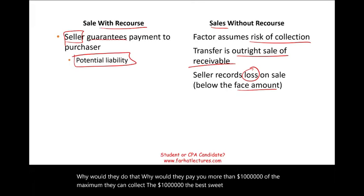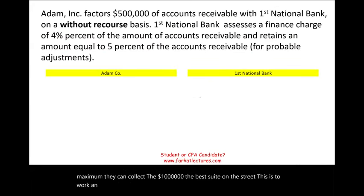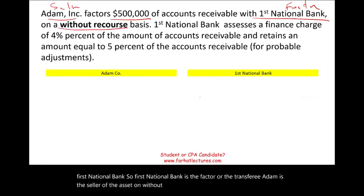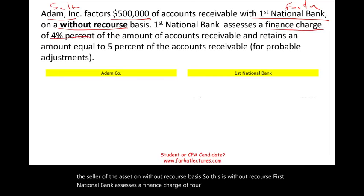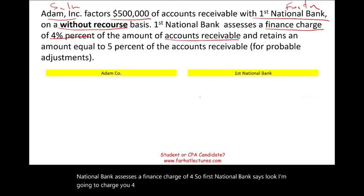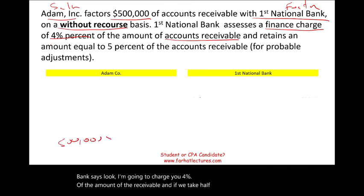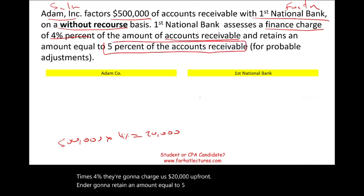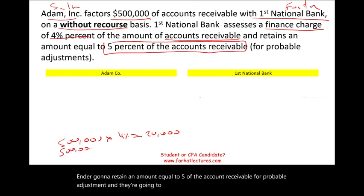Here's an example. Adam Inc. factors $500,000 of accounts receivable with First National Bank on a without-recourse basis. First National Bank assesses a finance charge of 4%, which is $500,000 × 4% = $20,000. They also retain an amount equal to 5% of the account receivable for probable adjustments: $500,000 × 5% = $25,000.